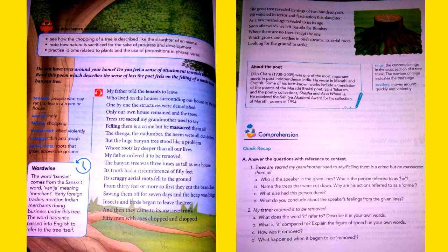So let's jump to page 26 again. The word banyan comes from the Sanskrit word vanija meaning merchant. Early foreign traders mentioned Indian merchants doing business under this tree. The word has since passed into English to refer to the tree itself. The name of the tree itself is the meaning of the tree and it is a word that has derived from Sanskrit. Sanskrit is so rich, we have derived so many words from this rich language.